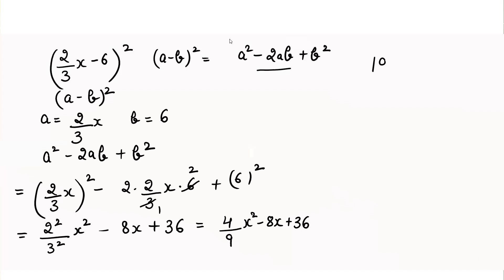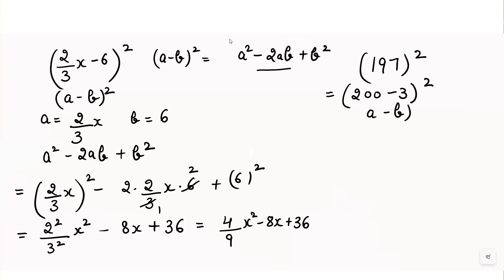Now as an example, let's find 197 whole square without multiplying the number twice. We can solve this using this identity. 197 can be written as (200 minus 3) whole square. Comparing with (a minus b) whole square, the value of a is 200 and the value of b is 3.